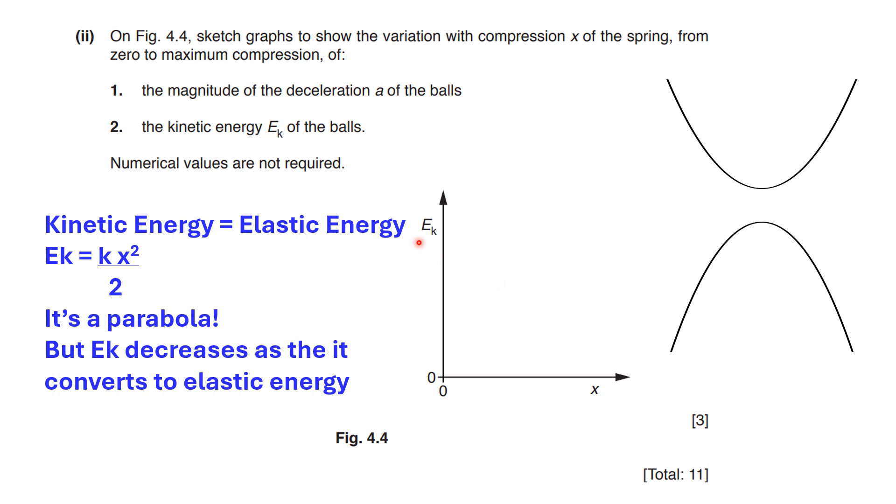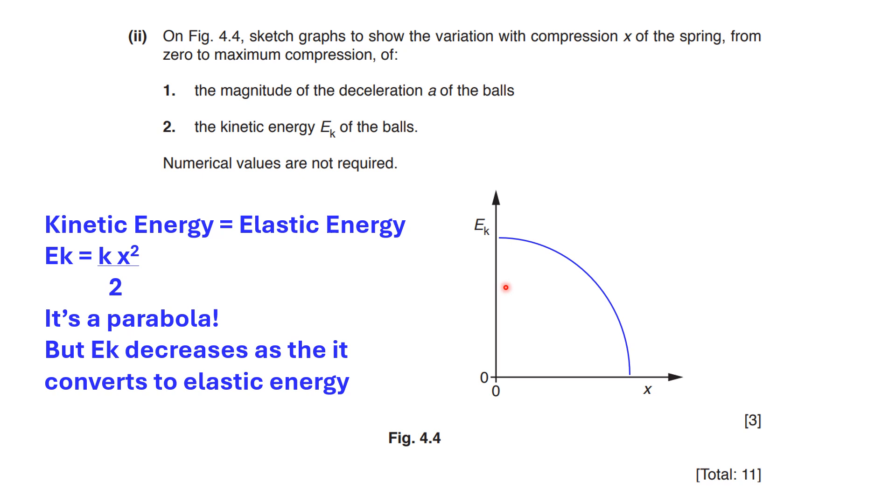Now, we need to sketch a graph with kinetic energy in terms of the compression. So, because the kinetic energy is converted into elastic potential energy, so this energy is given by this formula. Kx squared over 2. K is a constant, which means this graph is a parabola. However, because kinetic energy decreases as it converts to elastic energy, so it cannot be a parabola upward. It needs to be like downward. So, to sketch this graph, I'm going to show you on the next slide how it should look like. So, it's an inverted parabola. Starts with a value of kinetic energy and decreases over time. When it reaches the maximal compression, all kinetic energy is gone.